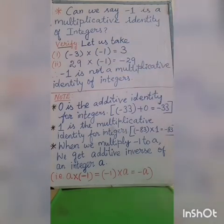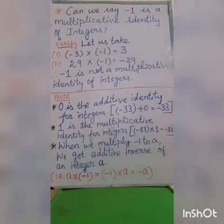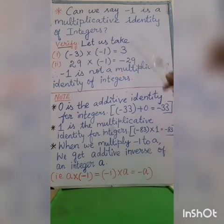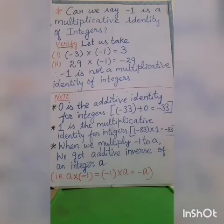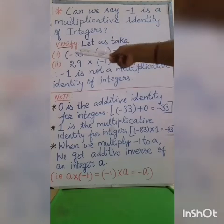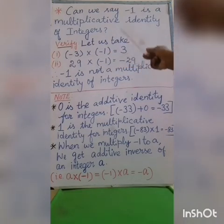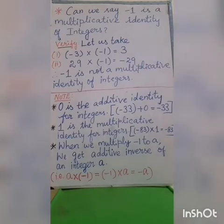The same integer is your answer — that is the identity. Here, multiply. So, multiplicative identity: but you take minus 3 and your answer is 3. So it is a contradiction, so it is not a multiplicative identity of integers.